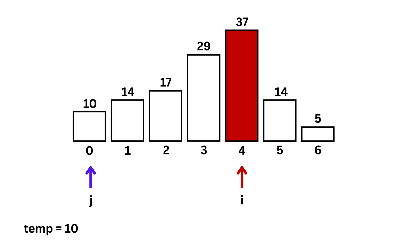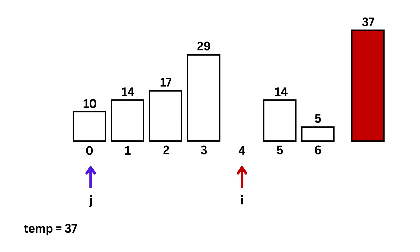Now, i moves to position 4, and thus temp is 37. j is equal to 3, pointing to 29. This time, 37 is greater than 29.